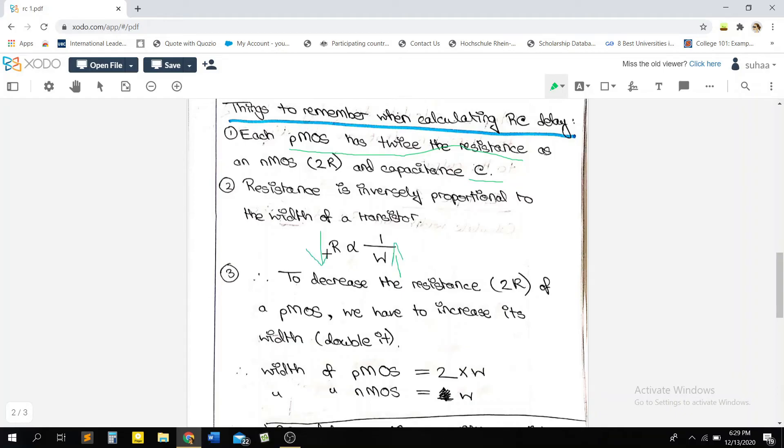So as I mentioned before, the PMOS has a higher resistance than the NMOS. So in order to make the PMOS resistance equal to the NMOS resistance...